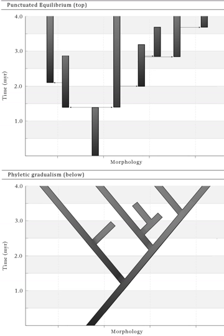When Eldredge and Gould published their 1972 paper, allopatric speciation was considered the standard model of speciation. This model was popularized by Ernst Mayr in his 1954 paper 'Change of Genetic Environment and Evolution,' and his classic volume Animal Species and Evolution. Allopatric speciation suggests that species with large central populations are stabilized by the large volume and the process of gene flow. New and even beneficial mutations are diluted by the population's large size and are unable to reach fixation, due to such factors as constantly changing environments. If this is the case, then the transformation of whole lineages should be rare, as the fossil record indicates.